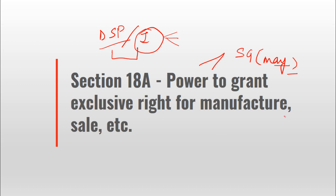Now, to whom can this exclusive right be granted? It can be granted to any corporation that is wholly owned and controlled by the state government. The exclusive right grant power is with the state government, but for the purpose of issuing the license to such corporations, it is the excise commissioner who grants the license — subject to rules made by the state government.